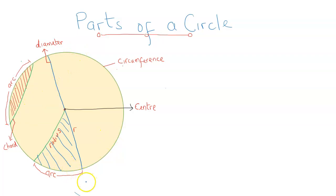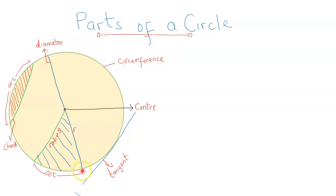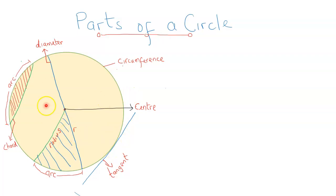A tangent is a straight line that's drawn outside of a circle to touch the circle at one point only. This line is drawn outside of the circle, and this point is the point of contact of the tangent.